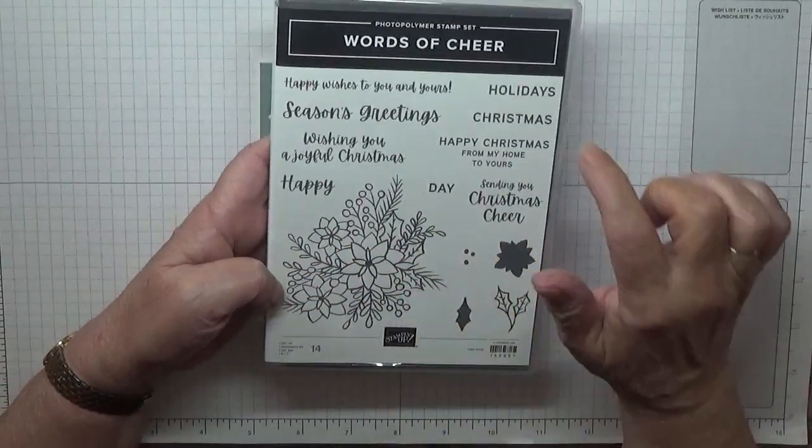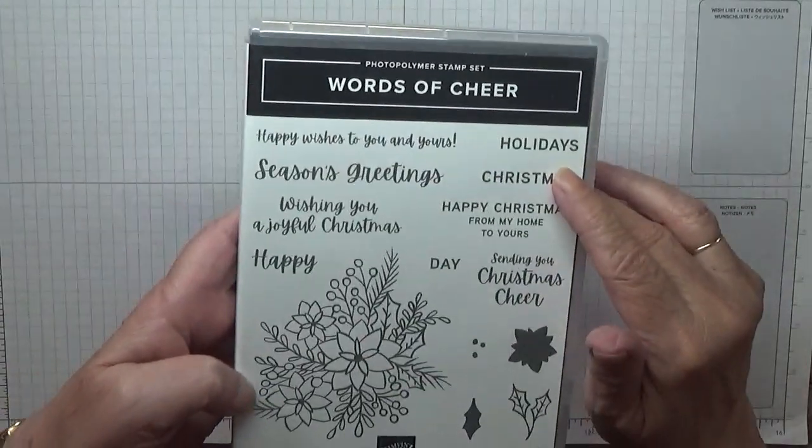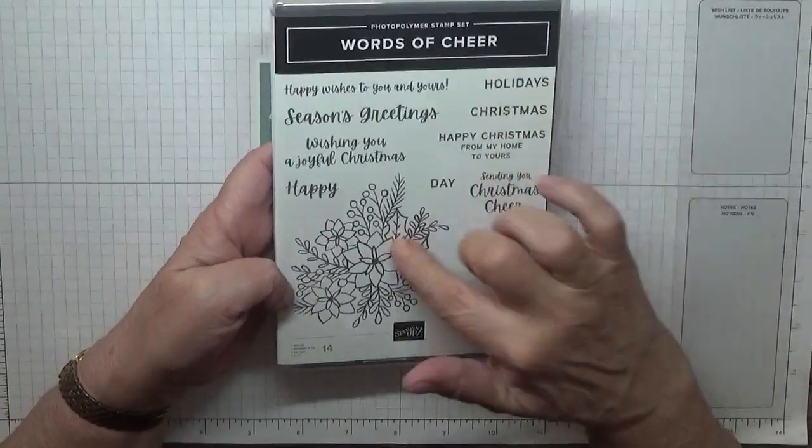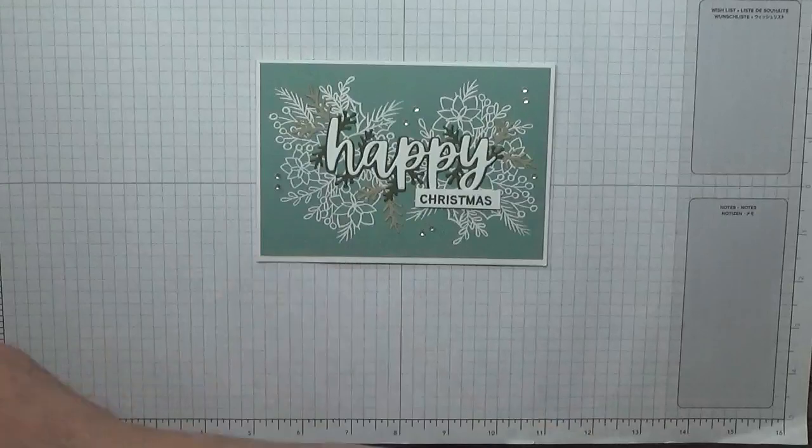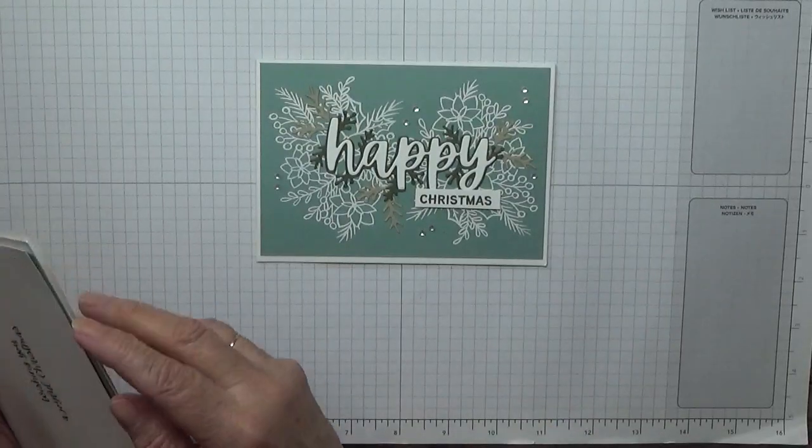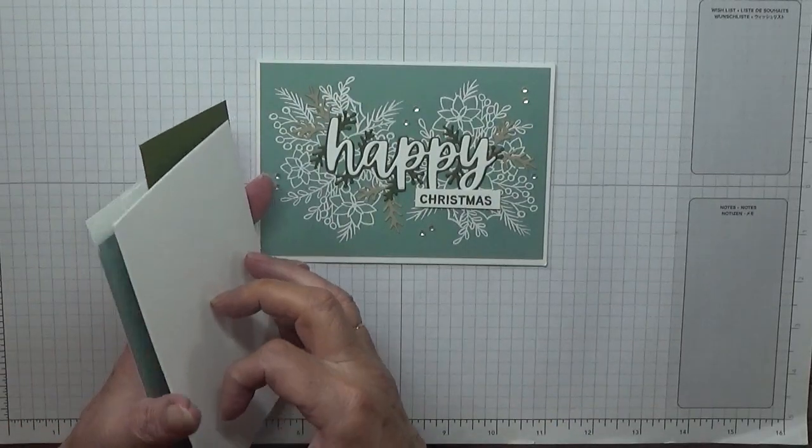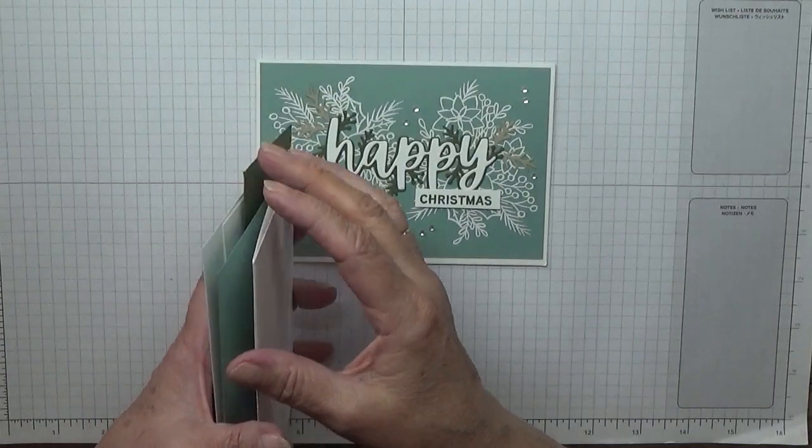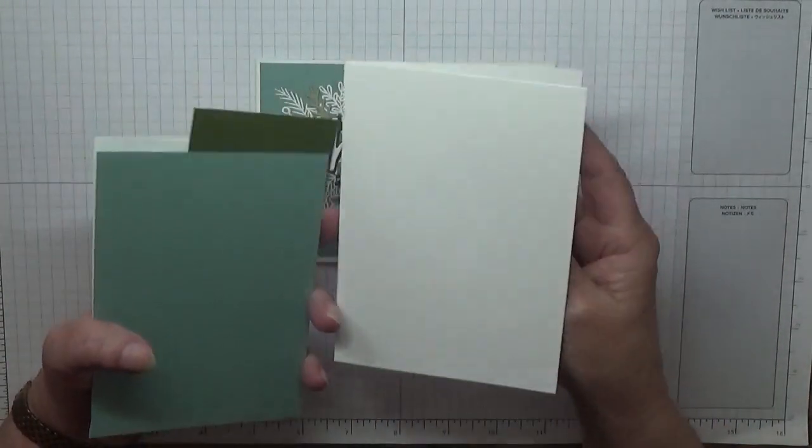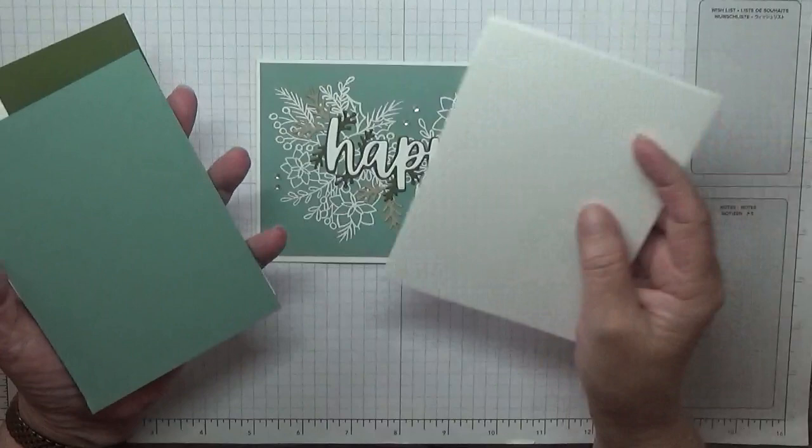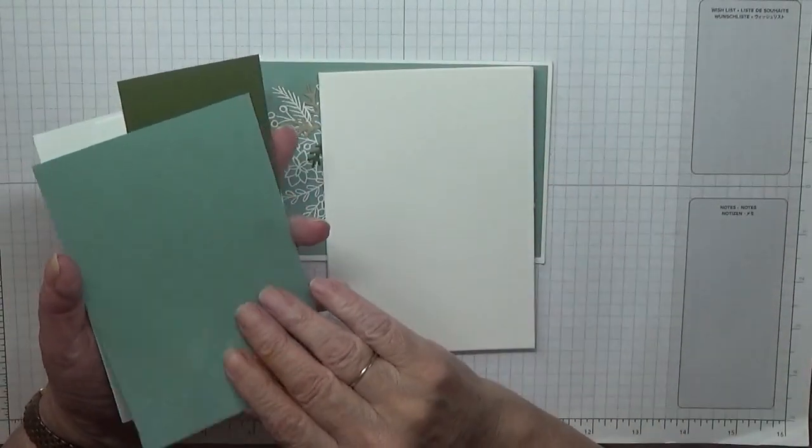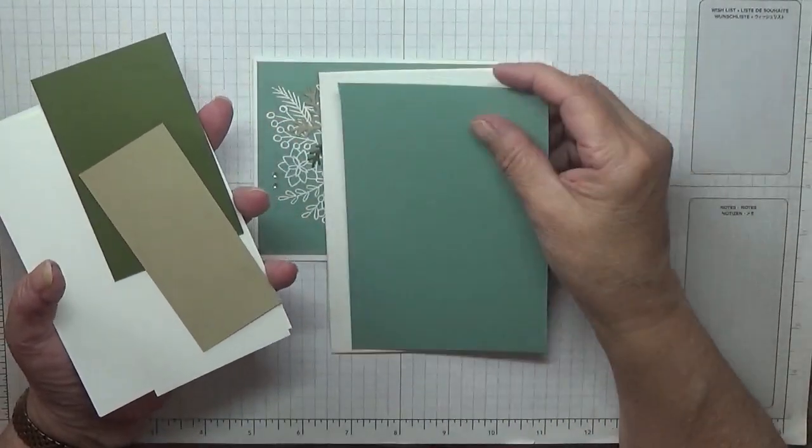I have got a card base of eight and a quarter by five and seven eighths, scored at four and one eighth, folded in half. I have a piece of...